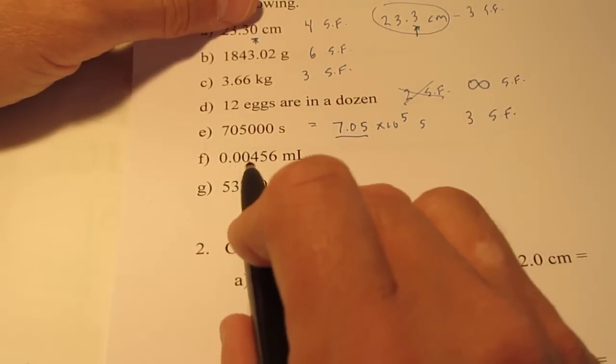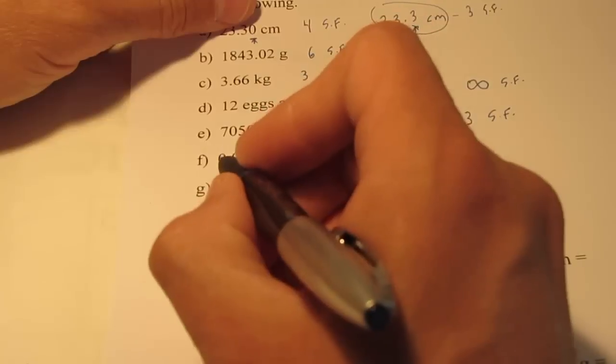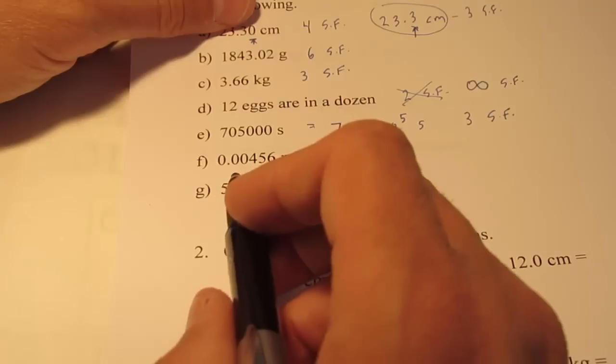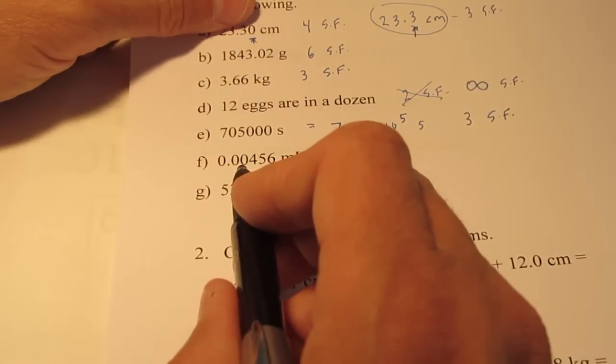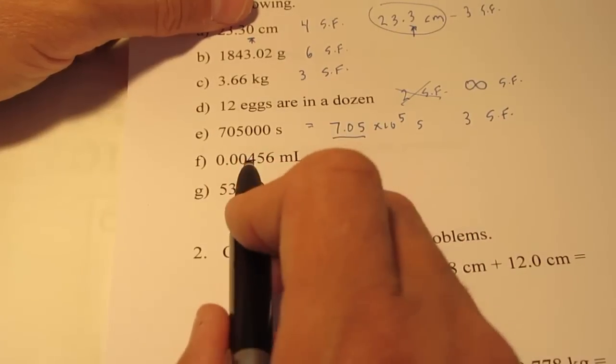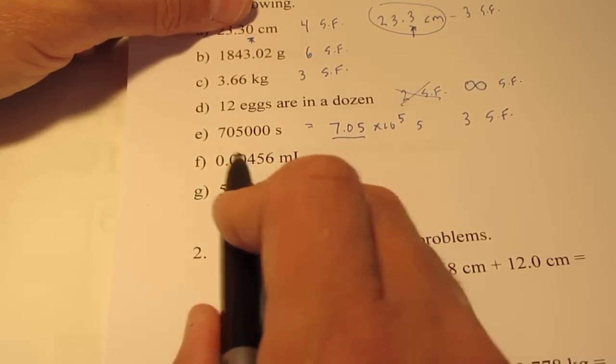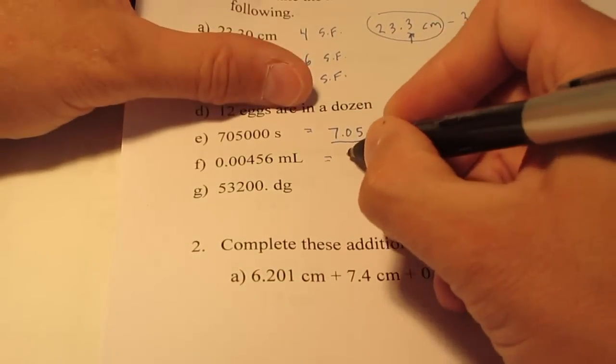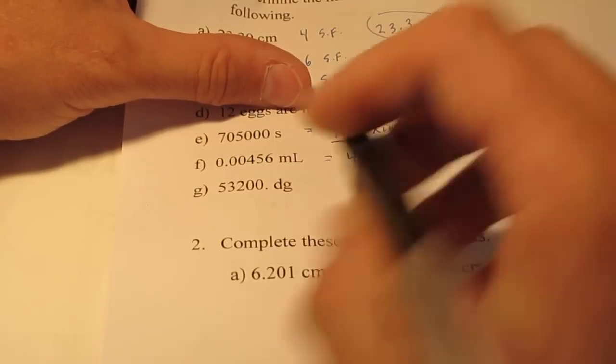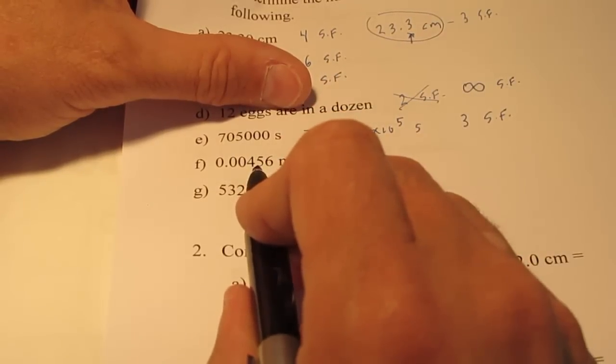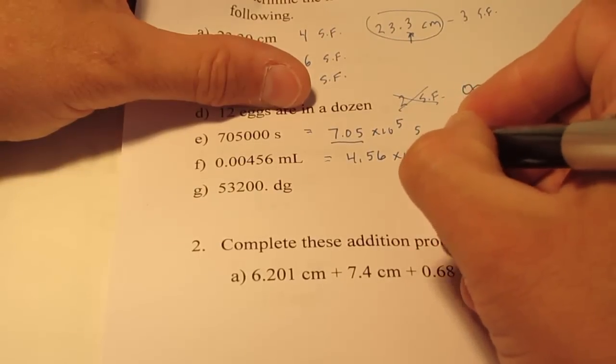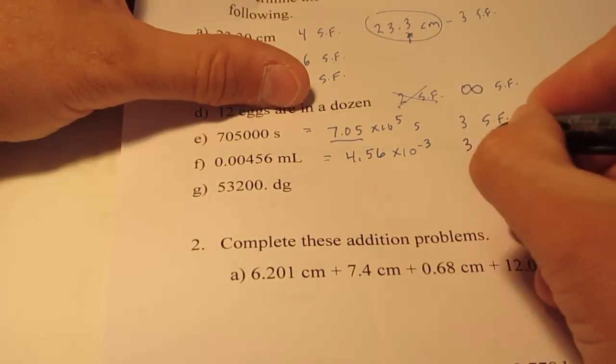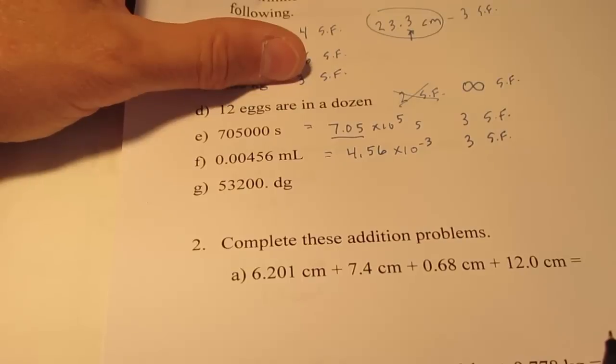Alright, how about 0.00456 milliliters? Well, that zero is sort of silly. Isn't that just letting us know that the decimal point is coming? How about these two zeros here? Well, the number doesn't end in zeros to the right. These are zeros at the beginning of my measurement. Now, we know that those aren't significant. Let's rewrite this in scientific form and see if we need them. Wouldn't I write it as 4.56 times 10 to the negative third? So, these zeros at the beginning are not significant. So, that measurement has 3 sig figs also.